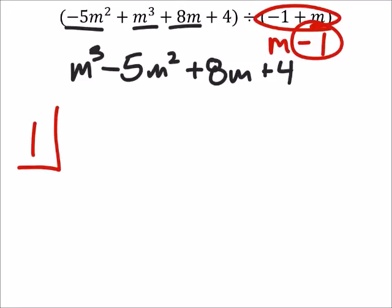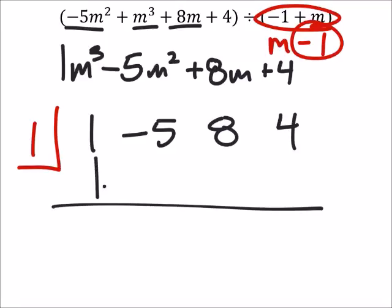Then we have all the coefficients. So again, we got a 1, -5, 8, and then our constant 4. So we'll have our line.